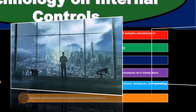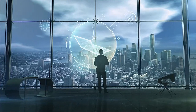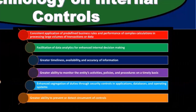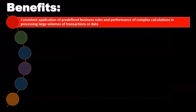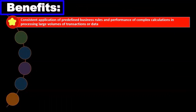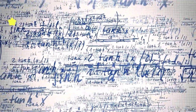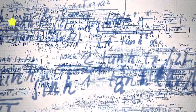Let's go through some of the benefits — pros and cons of technology with regards to internal controls. Benefits include consistent application of predefined business rules and performance of complex calculations in processing large volumes of transactions or data.